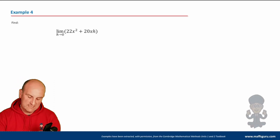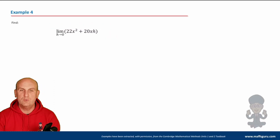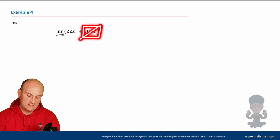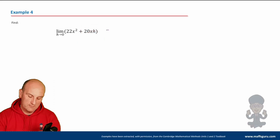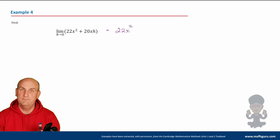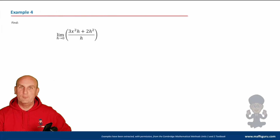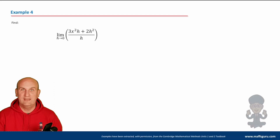Example 4 — understanding limit notation in practice. Given lim H→0 of (22x² + 20xH): anything with an H in it goes to 0, so this is simply 22x².